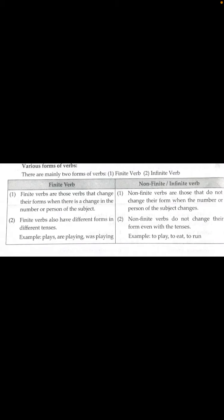Now let us see the various forms of verbs. There are mainly two forms: finite verb and non-finite verb. Finite verbs are those verbs that change their form when there is a change in the number or person of the subject. Finite verbs also have different forms in different tenses — past, present, and future. So in finite verbs, the formation of the verb changes based on the subject and tense.